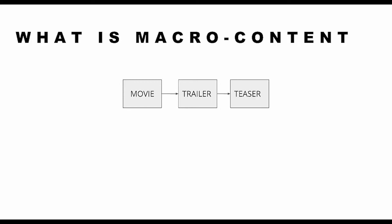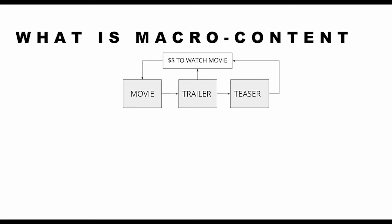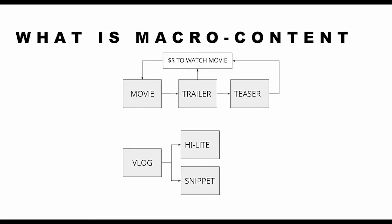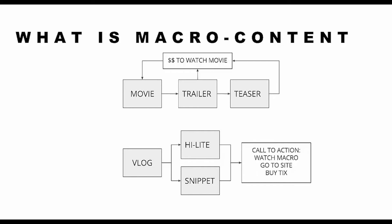So macro content — for example, a movie — allows us to create micro content, like a trailer or a 30-second teaser. The call to action is for people to spend money to go watch the movie. The macro is the full-length thing, and we use micro content to give a little teaser of the bigger picture. For one of our clients, it can be a vlog that allows us to create a highlight or snippet. Ultimately we want them to follow a call to action: watch the macro content, go to the site, buy tickets, buy the product — everything works together.